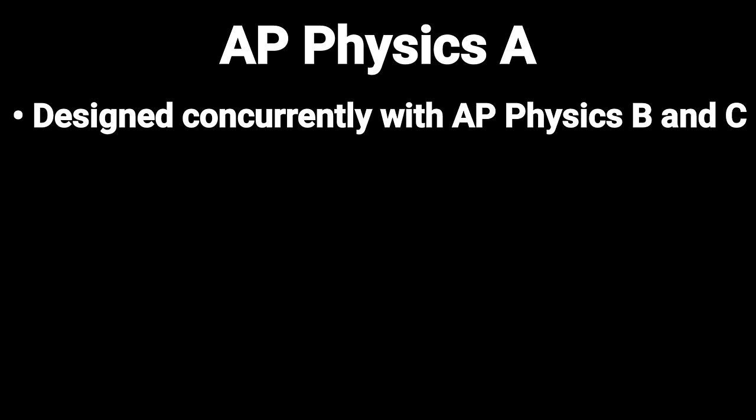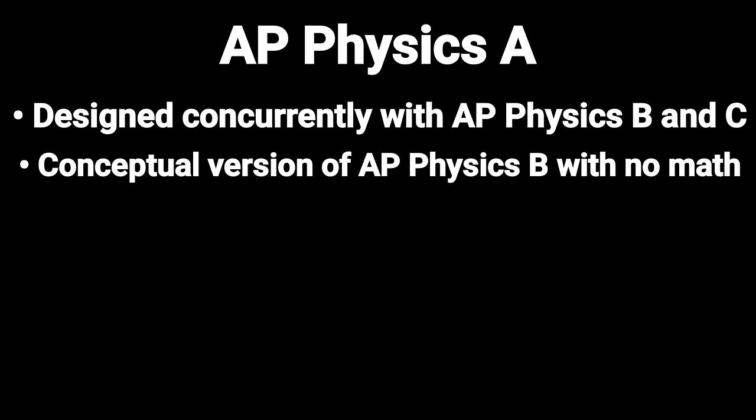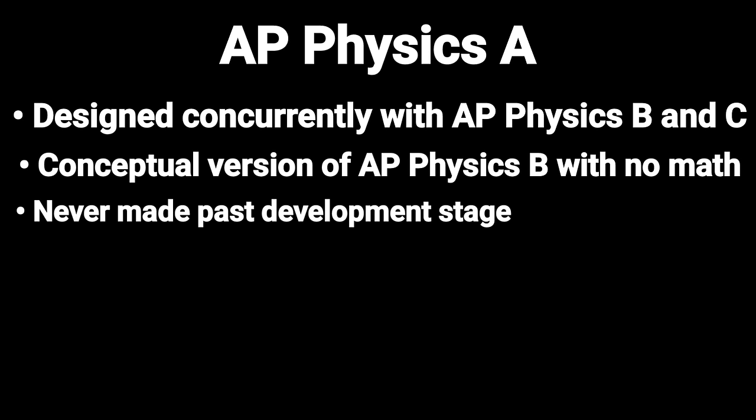Number 6 is AP Physics A. This was a course designed concurrently with AP Physics B and AP Physics C. AP Physics A was supposed to be a conceptual version of AP Physics B, employing little to no mathematics. However, AP Physics A never proceeded past the development stage, as colleges would not offer credit for the course — there was just never agreement on both sides.